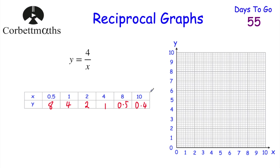So here we've got our points: (10, 0.4), (8, 0.5), (4, 1), (2, 2), (1, 4), and (0.5, 8). Let's plot them. So (0.5, 8) would be there, (1, 4) would be here, (2, 2) would be here, (4, 1) would be there, (8, 0.5) would be there, and (10, 0.4) would be there. We've plotted our points and now we're just going to draw a nice curve through them.